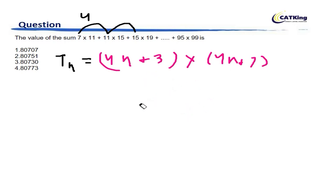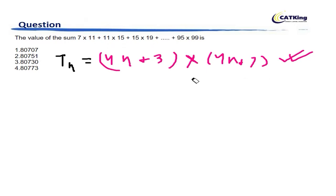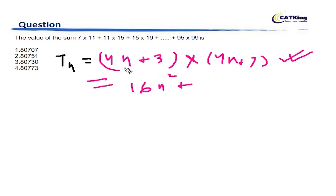Now that we have found the general term, this might take a little practice to perfect — but you should always check it after making it to see whether it satisfies. So the general term is (4n+3)(4n+7). Opening the brackets: 4n times 4n is 16n², 4 times 7 is 28n, 3 times 4n is 12n — so we get 16n² plus 40n plus 21.